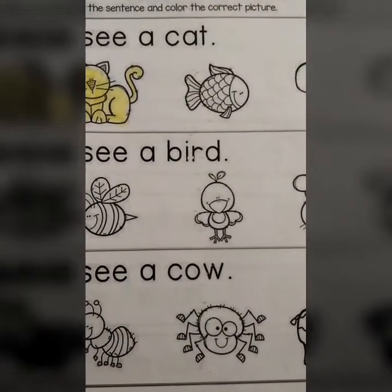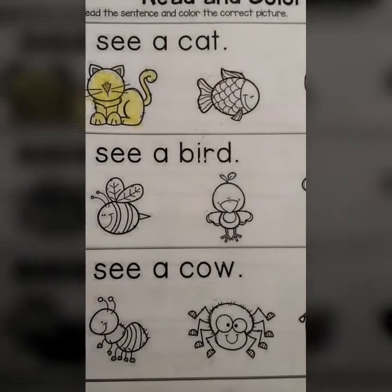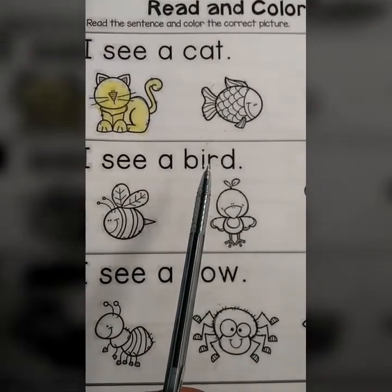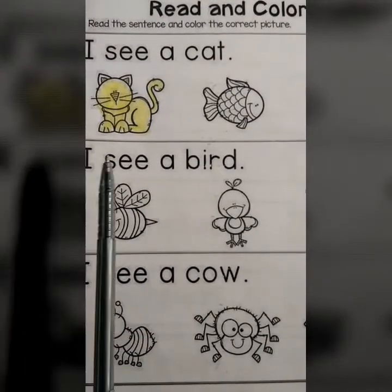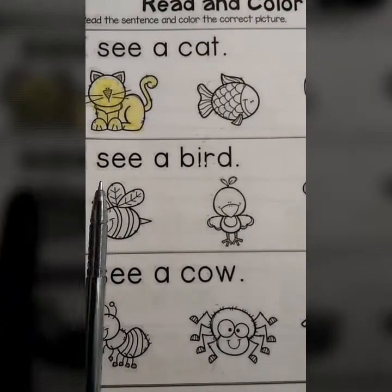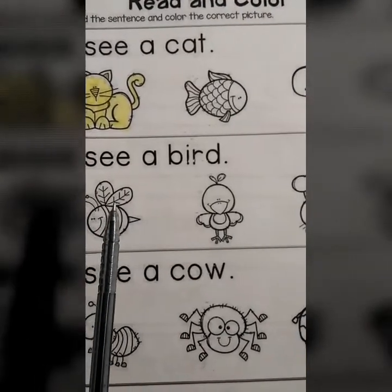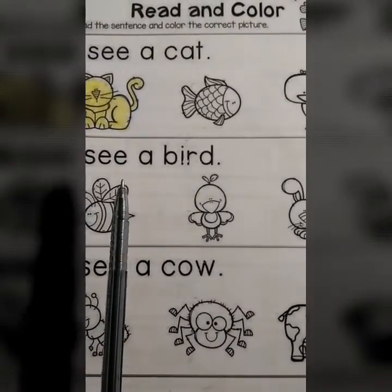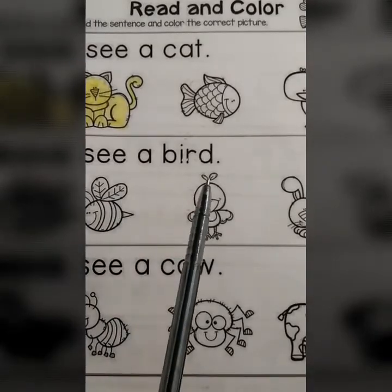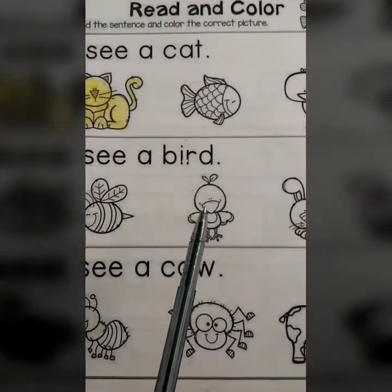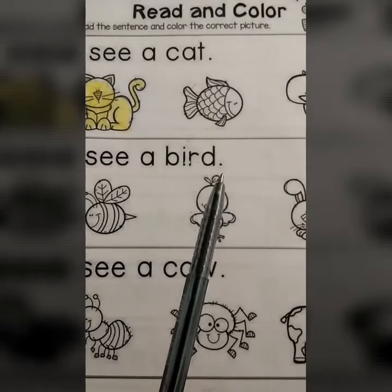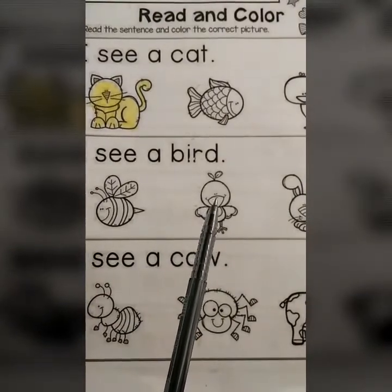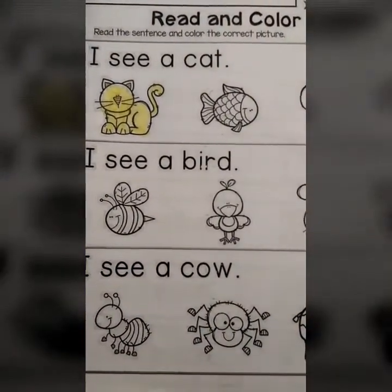The second sentence is: I see a bird. So can you guess, children, what is the bird here between these pictures? Yes, that's right! This is a bird.